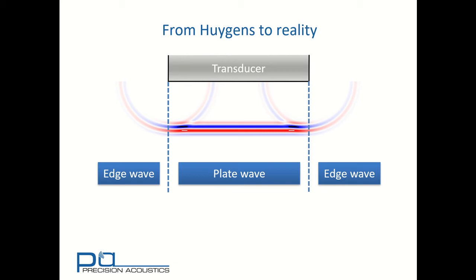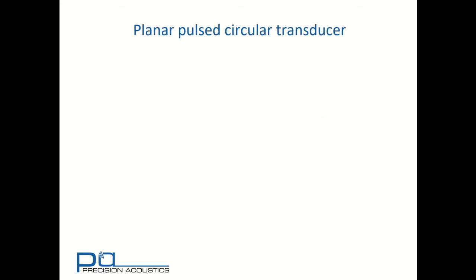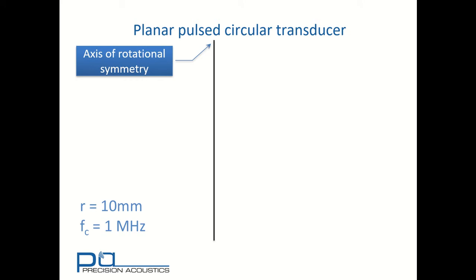But to start off with we'll look at an animation of a pulsed transducer with a short signal. As we discussed in the introduction for simplicity we'll consider 2D representation only. So this particular transducer of radius 10 millimetres and centre frequency of 1 megahertz has an axis of rotational symmetry. We're looking from R equals 0 to R equals 40 millimetres in the simulation. Here we can see the edge wave radiating out along with the plate wave.